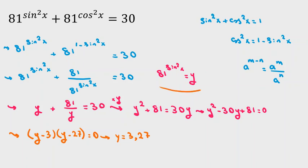Recall that y equals 81 to the power of sine squared x. So we have two cases: 81 to the power of sine squared x equals 3, or 81 to the power of sine squared x equals 27. Let's consider both cases.